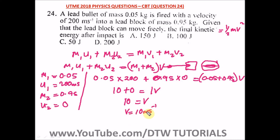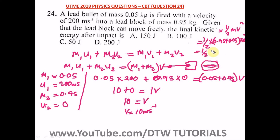Now we calculate the final kinetic energy. Using KE = ½mv², the combined mass is 0.05 + 0.95 = 1 kg, and v = 10 m/s. So KE = ½ × 1 × 10² = ½ × 100 = 50 joules. The final kinetic energy after impact is 50 joules, which is option C.